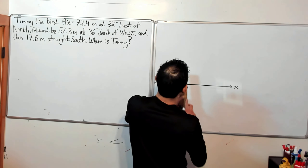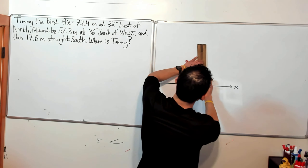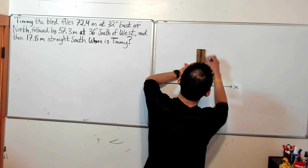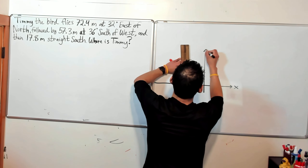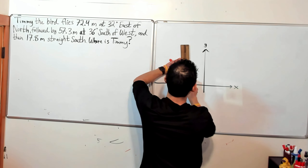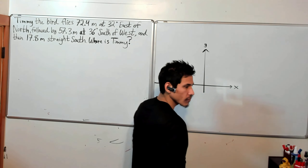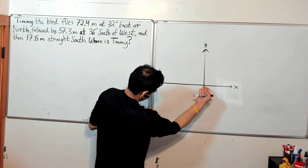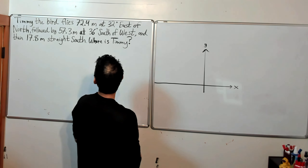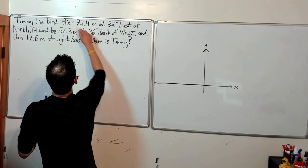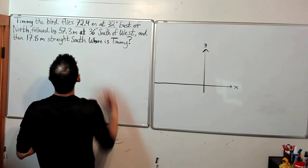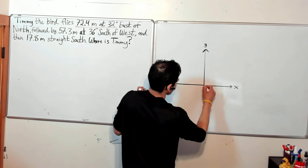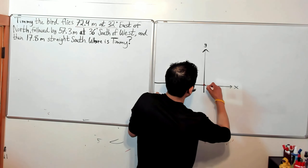Here's our X axis and our Y axis. Let's say we're starting here and let's have this first direction and magnitude be our first vector. We're going to have it be vector A.